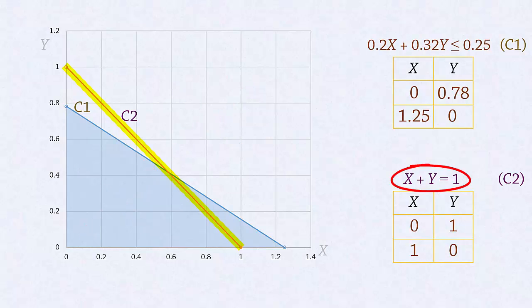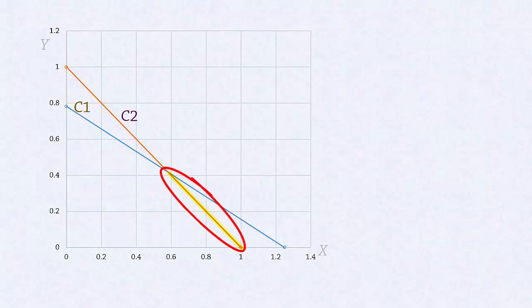Therefore, the only region satisfying both constraints simultaneously is this line segment here. And the optimal solution will occur at one of the extreme points of the segment. Let's label them A and B.